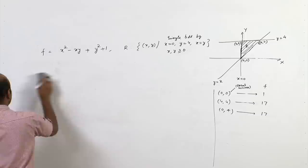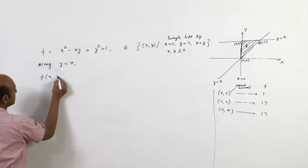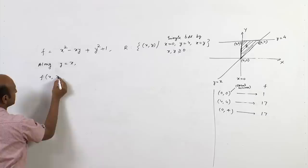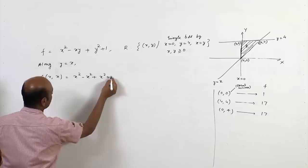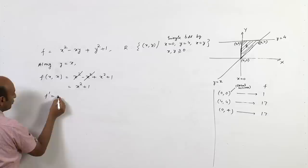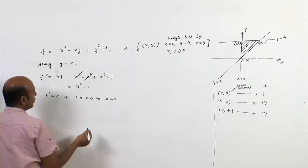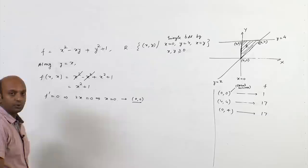Along y = x: f = x² - x² + x² + 1 = x² + 1. Taking the derivative: 2x = 0 implies x = 0, which gives the point (0,0) again. So no new critical points are found on this edge.